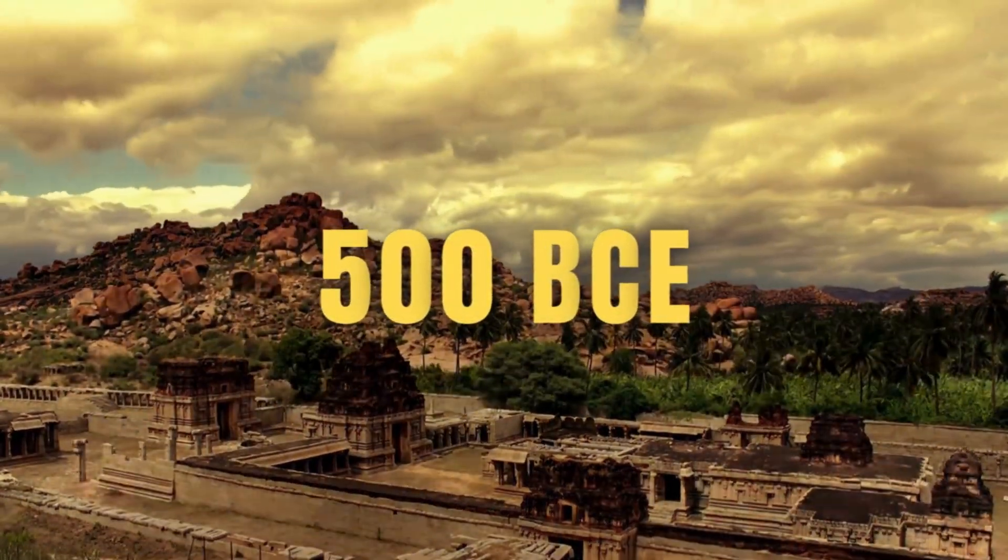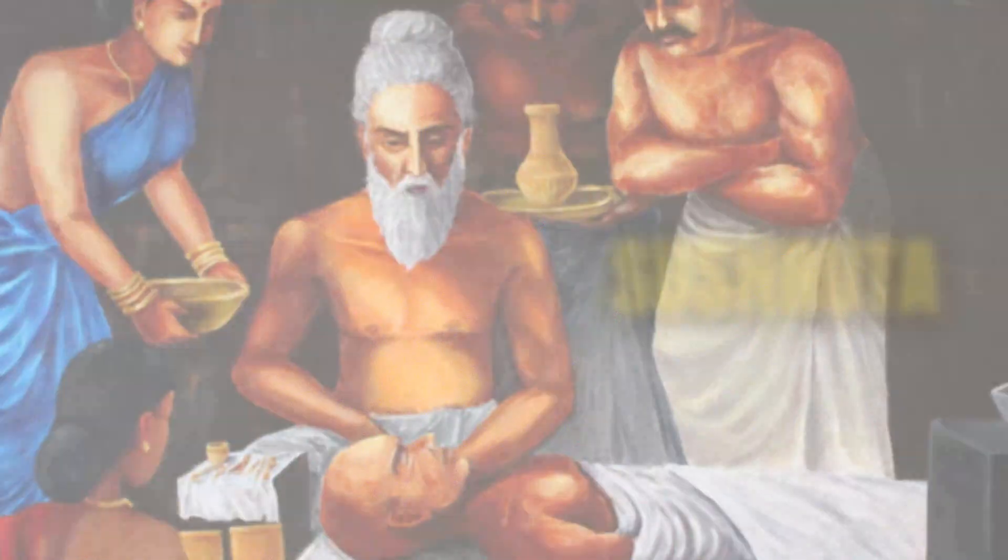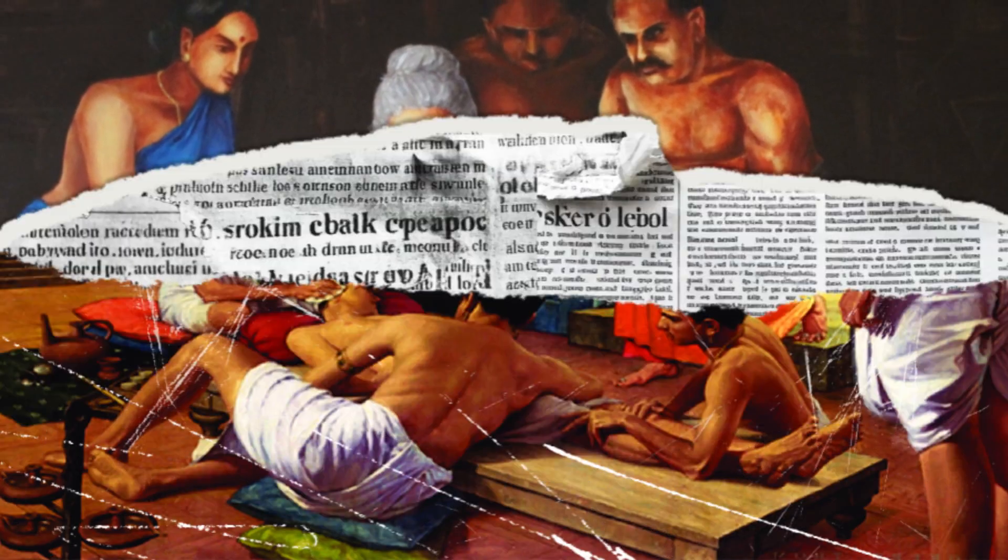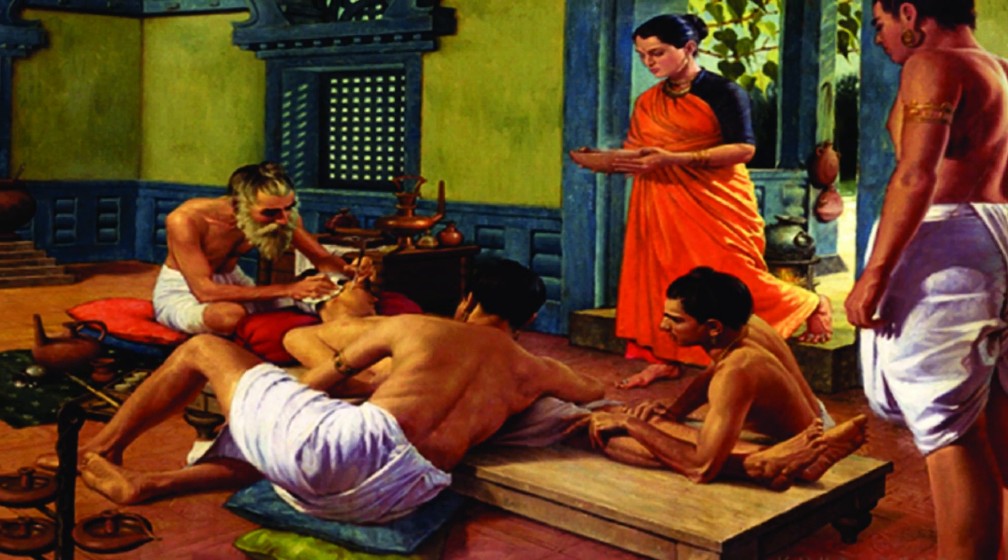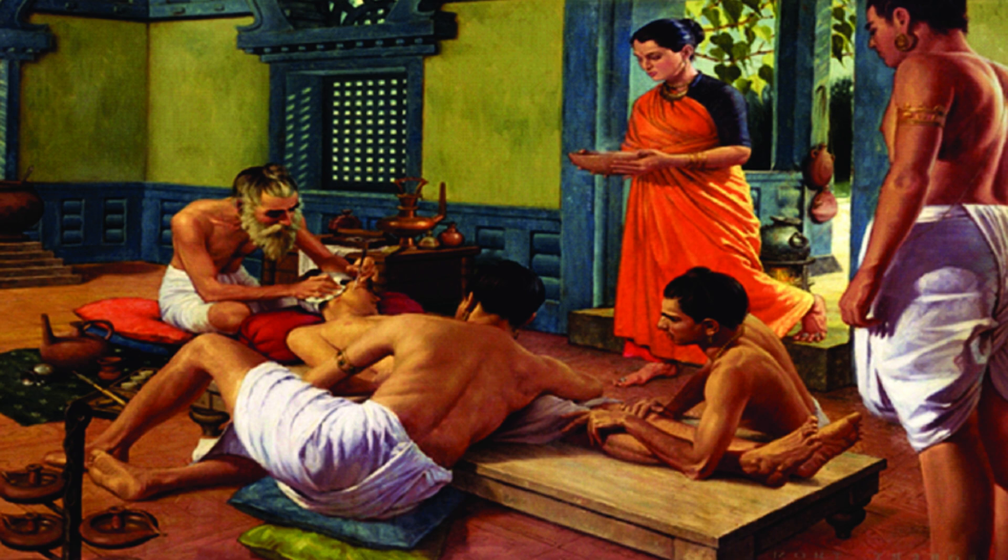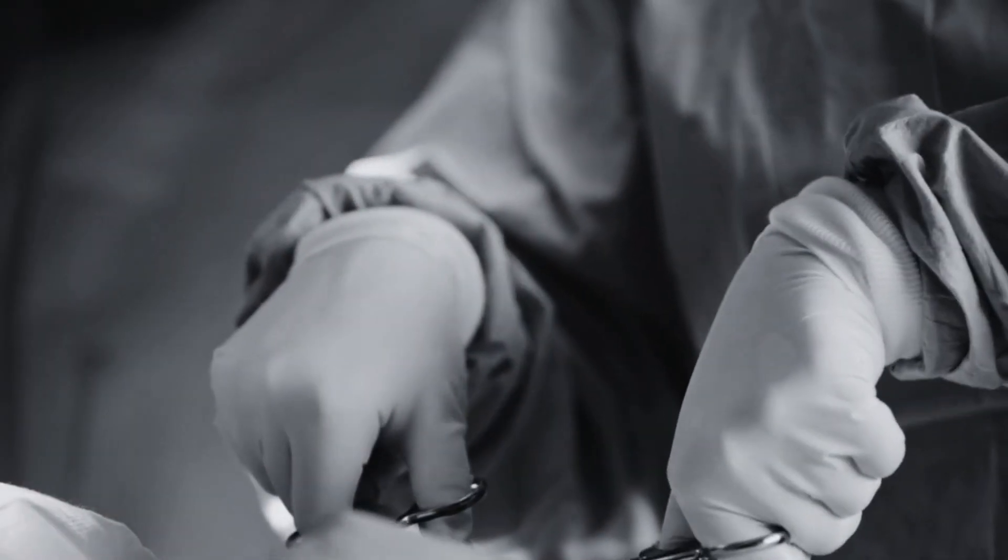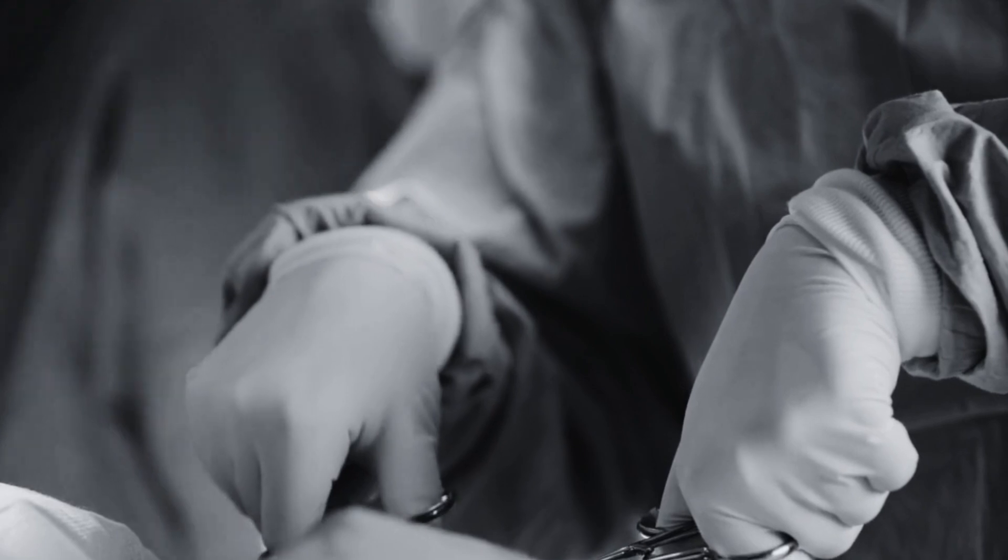In ancient India, around 500 BCE, a physician named Sushruta wrote some of the earliest known texts on brain surgery. Using tools made of stone and bronze, he described procedures that would terrify modern surgeons, including cutting into the skull to ease pain or madness.